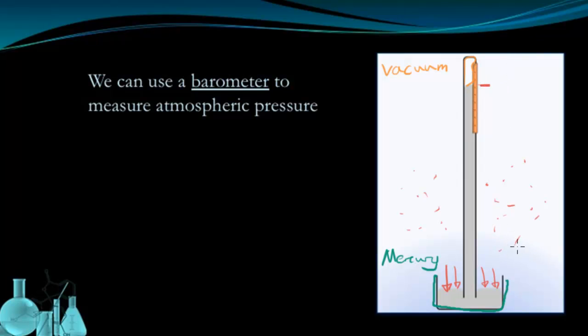Now, if this was at normal ground sea level, this would be 760 millimeters high. This millimeters of mercury unit is how we measure the atmospheric pressure at a given altitude.